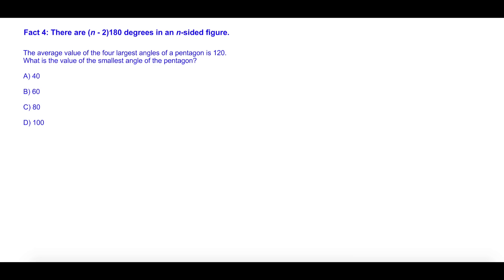Alright, our last question for today. The average value of the four largest angles of a pentagon is 120. What is the value of the smallest angle of the pentagon? So a couple things you need to know. First, a pentagon has five sides. It looks kind of like this - if you can interpret my drawing here - we've got one, two, three, four, five.